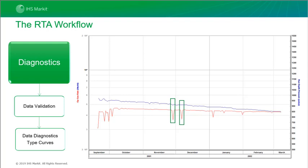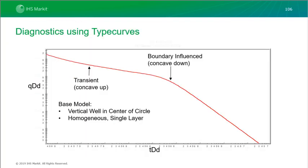For data validation we have some great tools in the software, such as data diagnostics and type curves. The next step is looking at diagnostics on a log-log plot — we're going to learn a lot about flow regimes and qualitatively what's going on with the data. There's a pattern recognition on a log-log plot that you can't just get on a linear plot of production data and pressure. For instance, the downward concavity indicating boundary dominated flow is very clear on this plot, and the upward concavity indicates transient flow on the left-hand side.